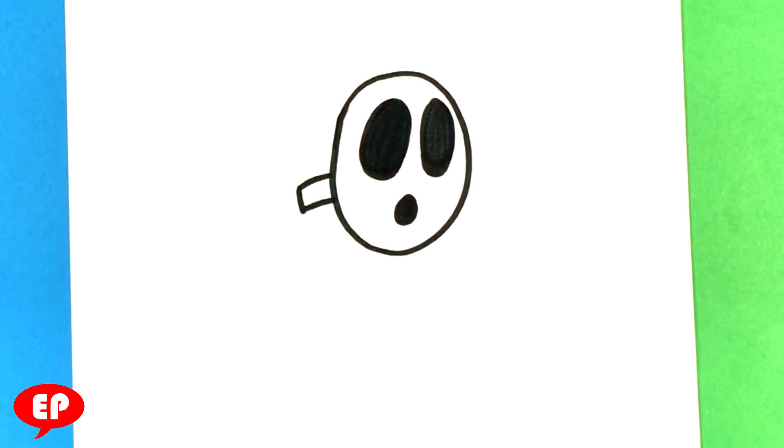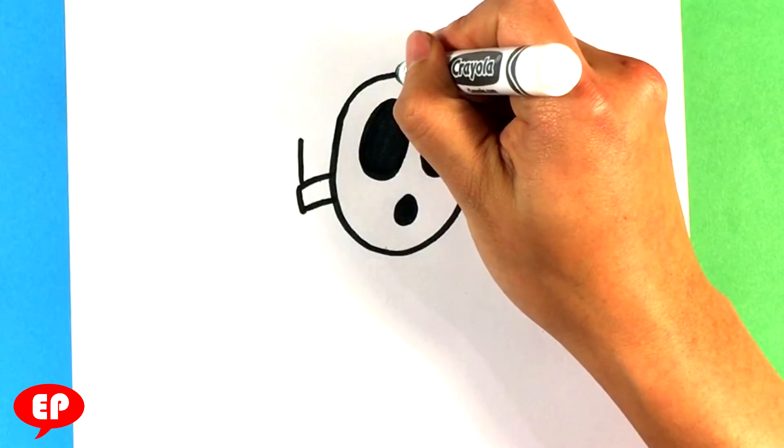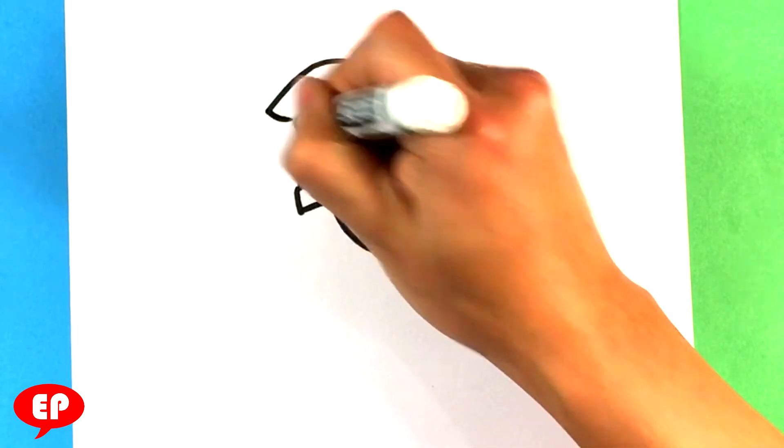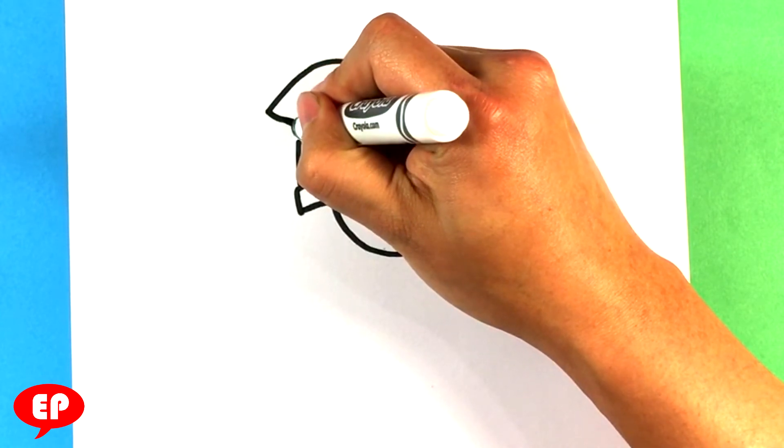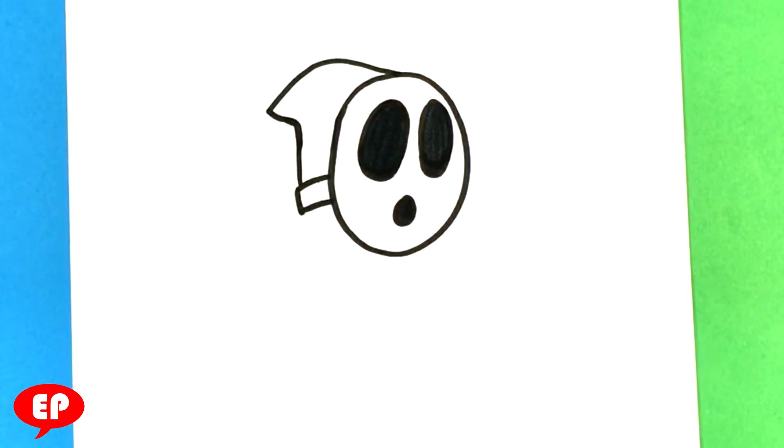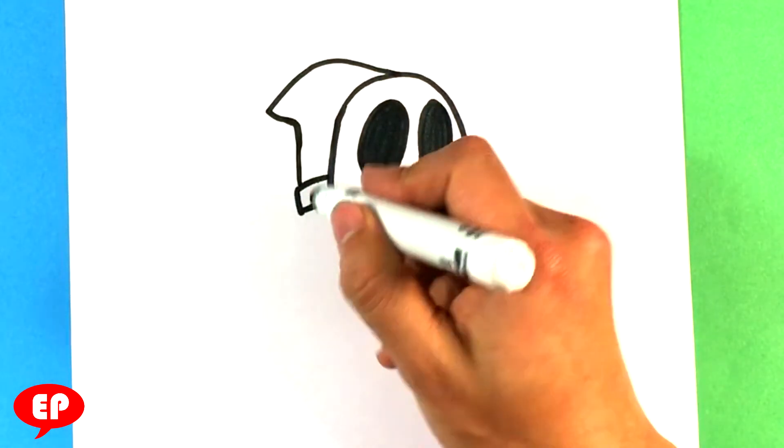Back of the mask. Straight line up. Pull a line here. It's kind of, he has this little, I don't know how to say, like a hoodie thing going on. That kind of feel.